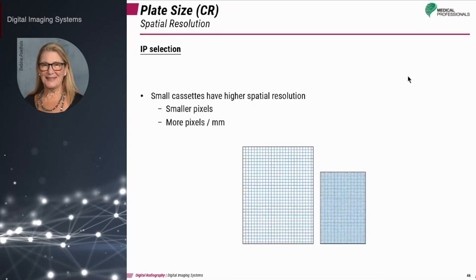Spatial resolution also depends on imaging plate size. CR readers scan at a relatively constant frequency of about 2,000×2,000 pixels. Using the smallest imaging plate possible results in the highest sampling frequency and thus higher spatial resolution. Smaller cassettes have higher spatial resolution because they have smaller pixels and therefore more pixels per millimeter.